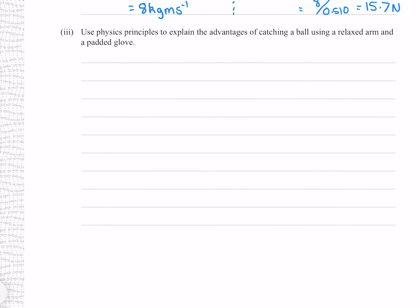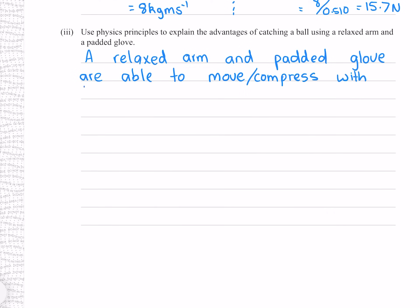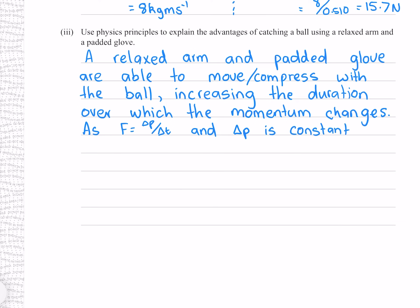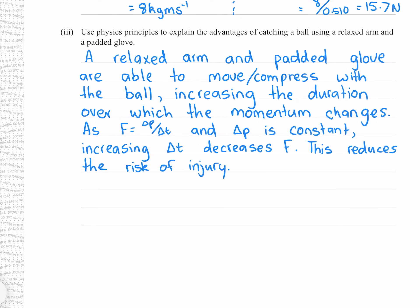Use physics principles to explain the advantages of catching a ball using a relaxed arm and a padded glove. A relaxed arm and padded glove are able to move and compress with the ball, increasing the duration over which the momentum changes. As F equals delta p over delta t, and delta p is constant, increasing delta t decreases F, which reduces the risk of injury.